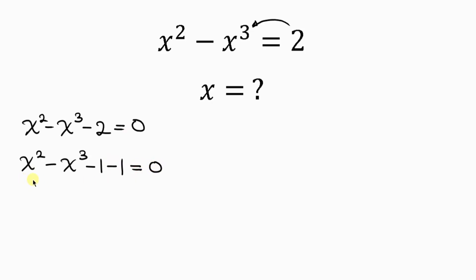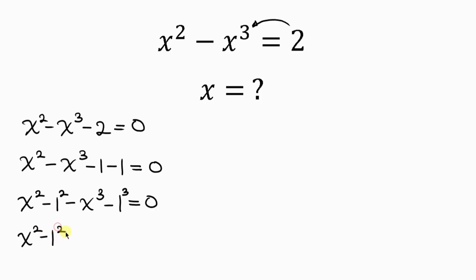This can further be simplified into x squared minus 1, minus x cubed minus 1, and this is equal to 0. Now we know that 1 is the same as 1 squared, and 1 here is also the same as 1 cubed. Notice that negative is common, so we can factor out negative from here: negative times (x squared minus 1 squared) minus (x cubed minus 1 cubed) equals 0.